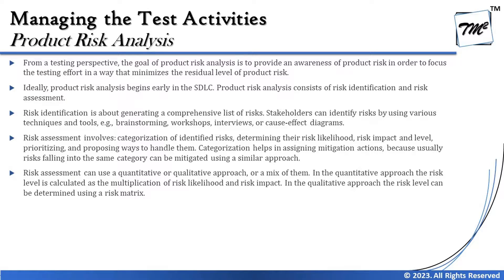Ideally, product risk analysis begins early in the SDLC. Product risk analysis consists of two major phases: risk identification and risk assessment. Risk identification is about generating a comprehensive list of risks involving a wide range of stakeholders. Stakeholders can identify risk using various techniques such as brainstorming, workshops, interviews, or cause-effect diagrams.